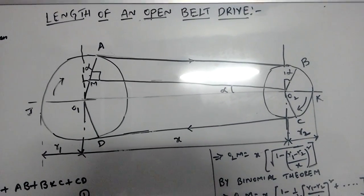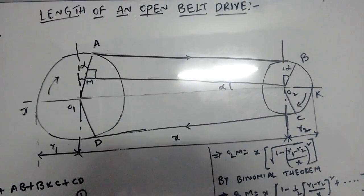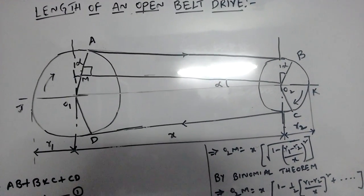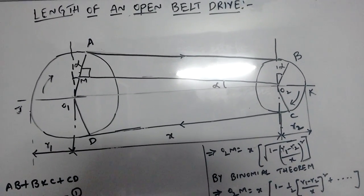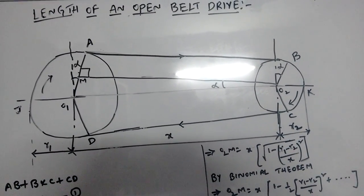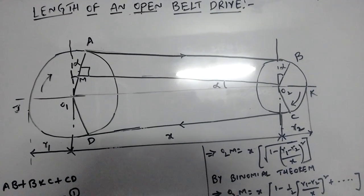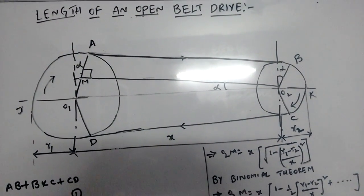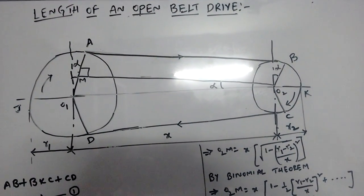We are going to discuss the length of an open belt drive. We can observe two pulleys here which are surrounded by an open belt. The directions of the two pulleys are the same in nature, whereas in a cross belt drive the directions of the pulleys are opposite in nature.